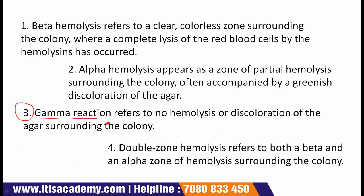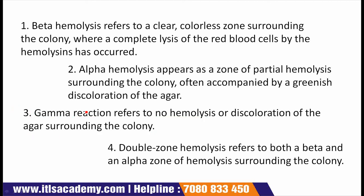Point 3 is gamma reactions, which refer to no hemolysis or discoloration of the agar surrounding the colony. Point 4 is double zone hemolysis, which refers to both a beta and an alpha zone of hemolysis surrounding the colony.